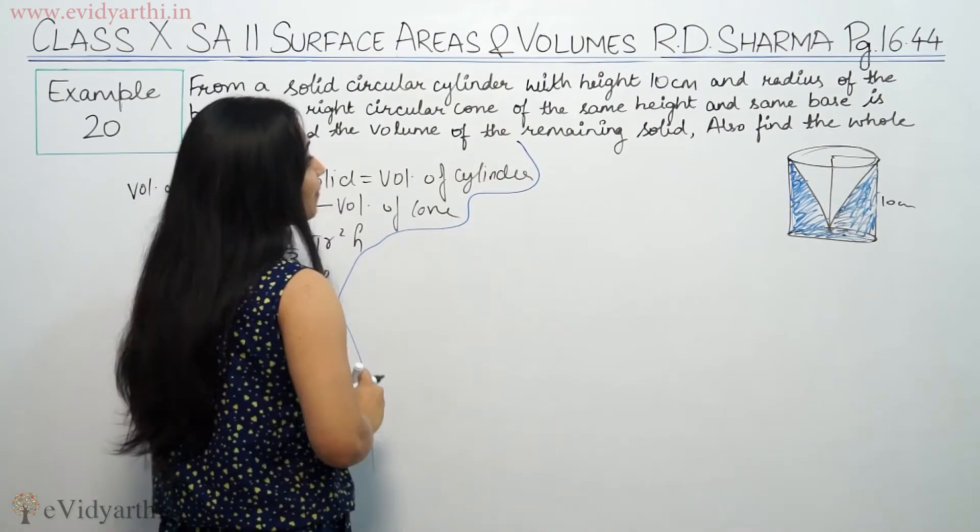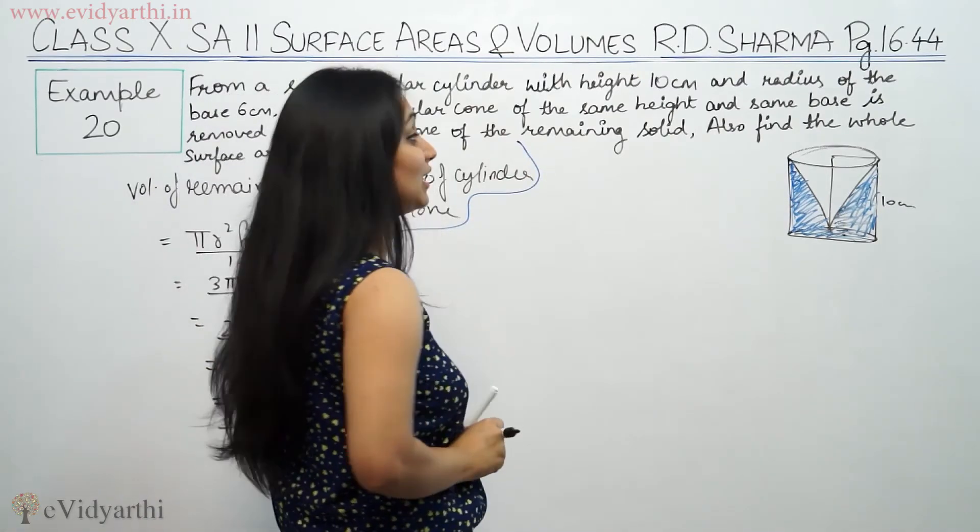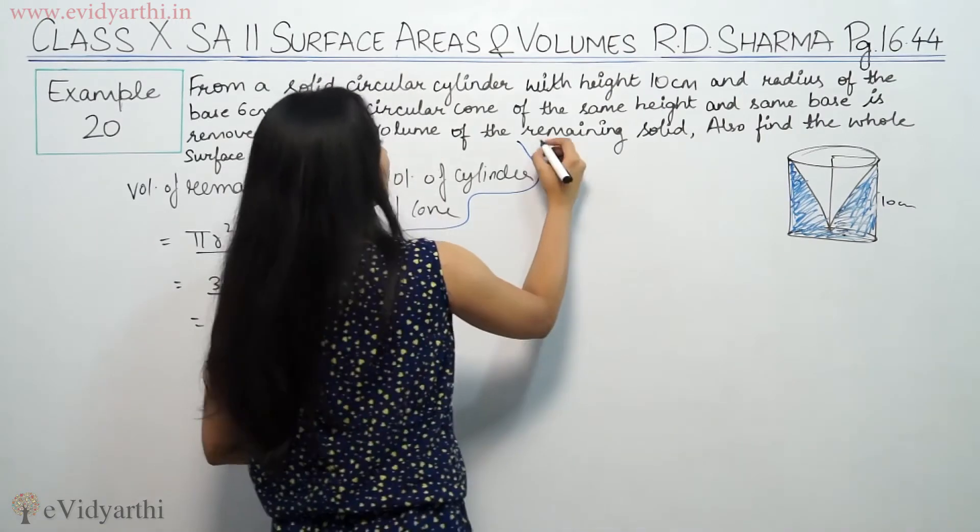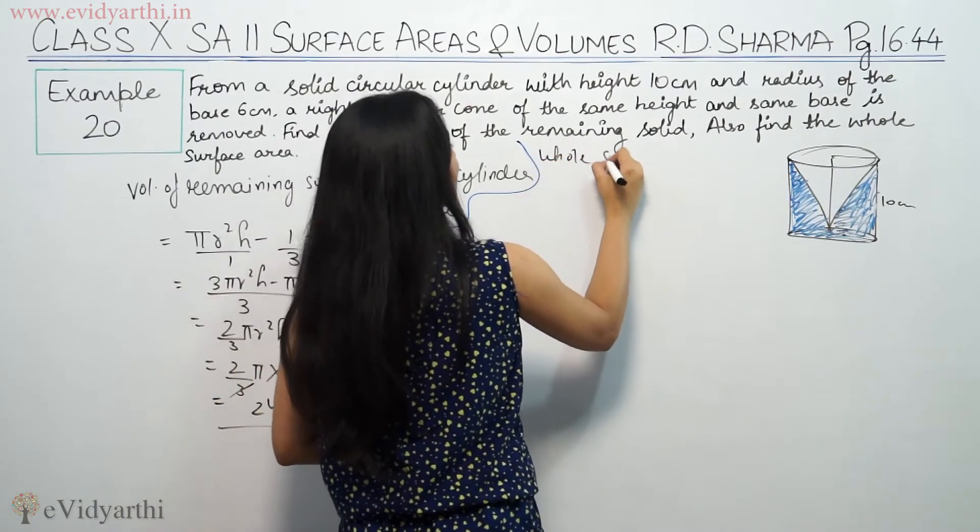Now find the whole surface area. For whole surface area, we need curved surface area of cylinder first.